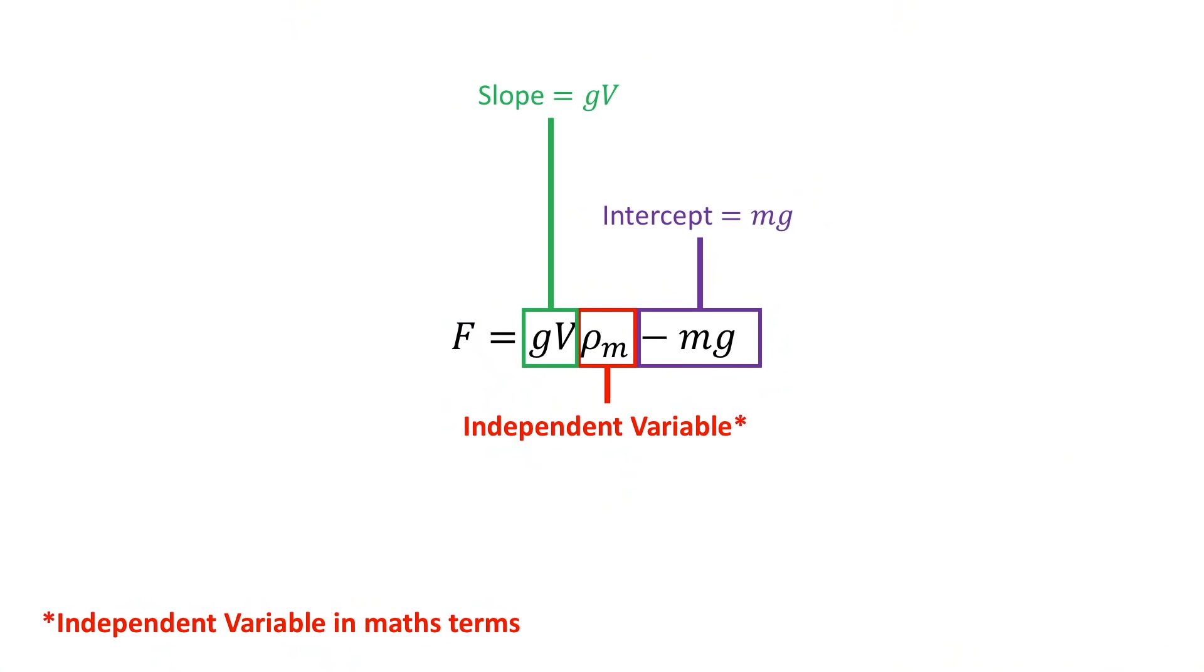What about the object's mass and volume? Our prediction states that the slope is given by the object's volume and the acceleration due to gravity, and this means that if we plot the slope against the object's volume, the slope of that line should be equal to the acceleration due to gravity at 9.80665 meters per second squared, and that is this plot.